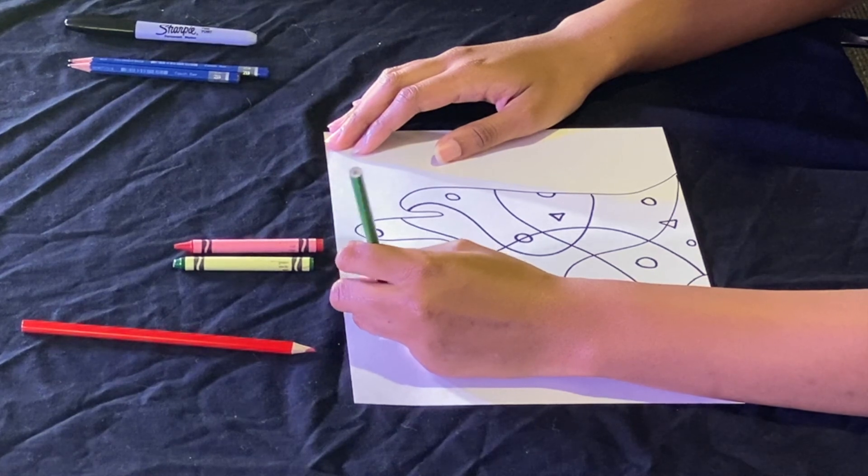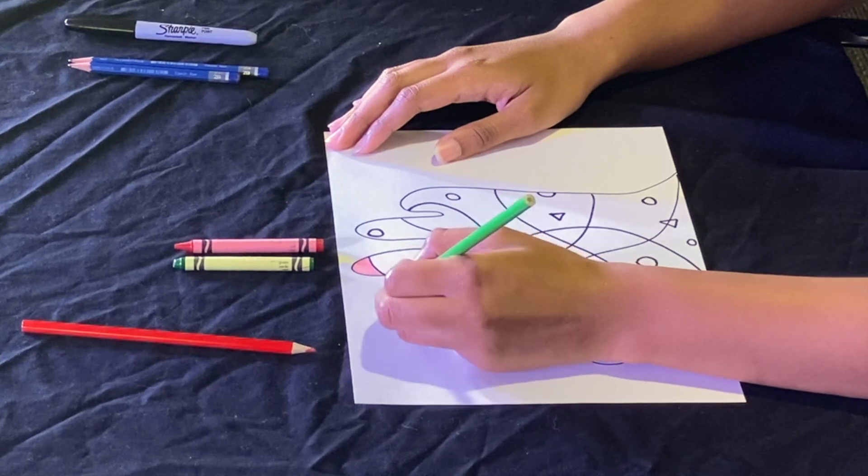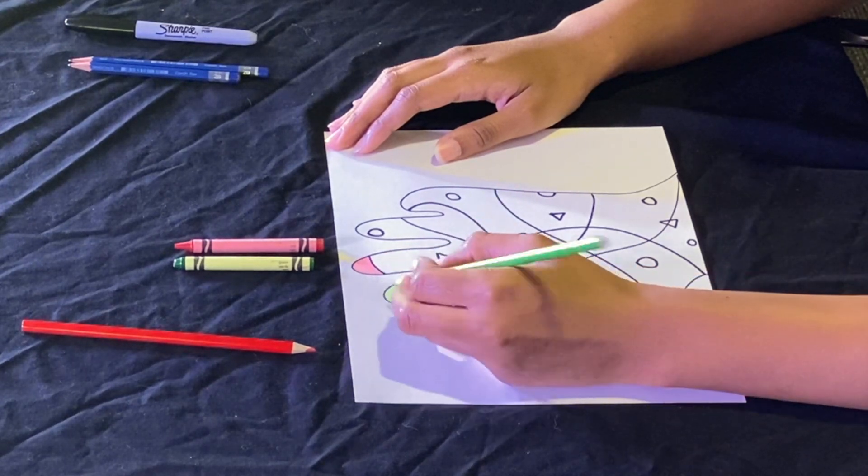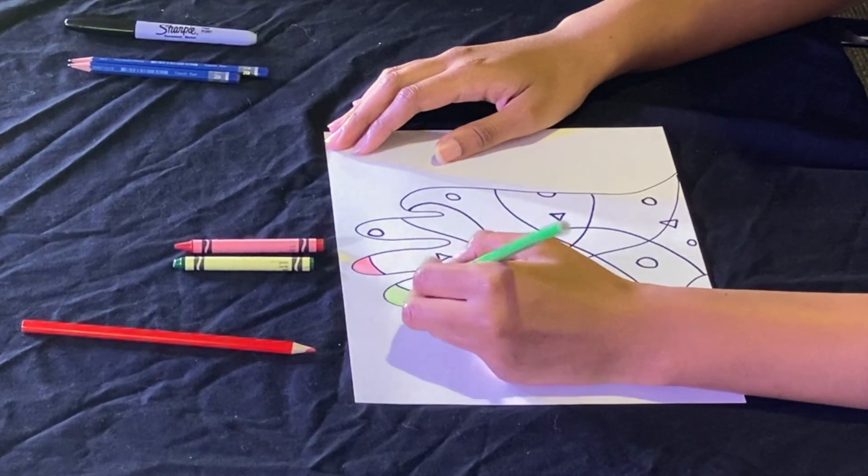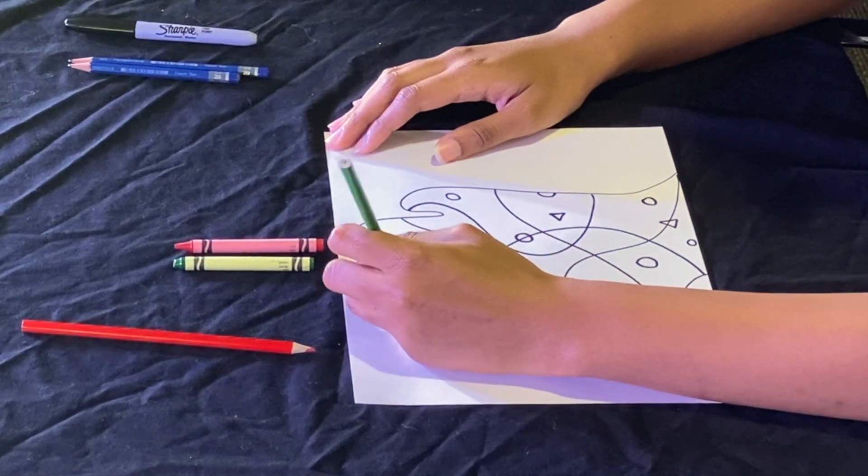You can also think about how hard you're pressing down on your crayon, your colored pencil. If that makes it darker, you kind of get a different shade of green, a different shade of red or whatever other colors you're using.